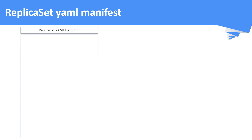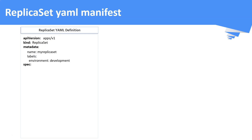A replica set definition has four important top-level fields: apiVersion, kind, metadata, and spec. For a replica set, the apiVersion should be apps/v1 and the kind should be ReplicaSet with R and S in uppercase. The metadata field holds the name and the labels for the replica set. Under spec, you have three important fields: replicas, selector, and template.